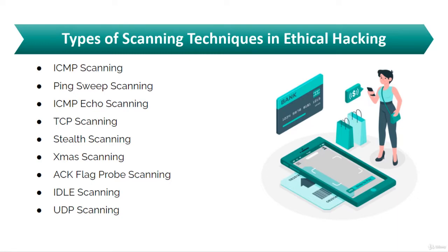TCP connect scan does not require super user privileges. The next is SYN scan, also known as half open scan. The SYN scan involves resetting the TCP connection between the client and the server abruptly before completing the three-way handshake, hence making the connection half open. Attackers use SYN scanning techniques to bypass firewall rules, logging mechanisms, and hide themselves under normal network traffic. So if anyone asks which scan can be used to bypass a firewall, you can confidently answer SYN scan.